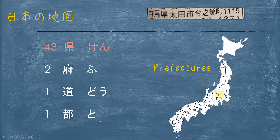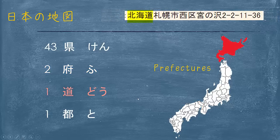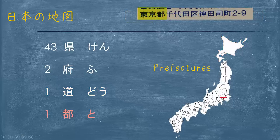That is for the majority of places in Japan. There are two urban prefectures: Osaka-fu and Kyoto-fu. And then there is one Do — in this case Hokkaido — and also one metropolis, Tokyo-to.